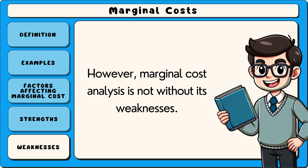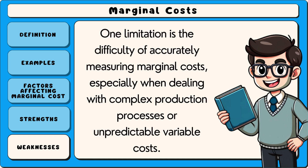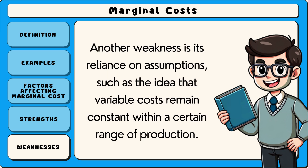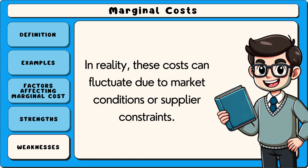However, marginal cost analysis is not without its weaknesses. One limitation is the difficulty of accurately measuring marginal costs, especially when dealing with complex production processes or unpredictable variable costs. Another weakness is its reliance on assumptions, such as the idea that variable costs remain constant within a certain range of production. In reality, these costs can fluctuate due to market conditions or supplier constraints.